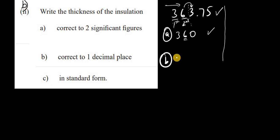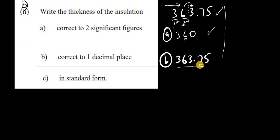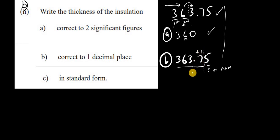For part B, taking the same 363.75, we correct it to 1 decimal place. We write the whole number portion, 363, and look at the digit in the first decimal place, which is 7. The first digit being chopped off is 5, which is in the category of 5 or more, so we add 1 to the 7. That gives us 363.8 to 1 decimal place.